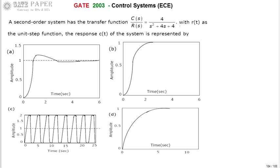When the input is a unit step, the response is simply the unit step response of a second-order system. The unit step response of a second-order system depends on the zeta value — zeta being the damping ratio.